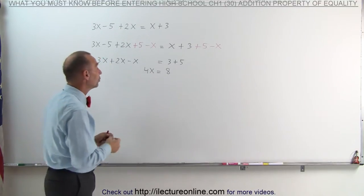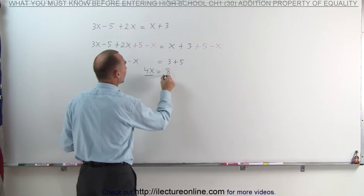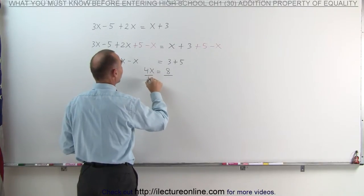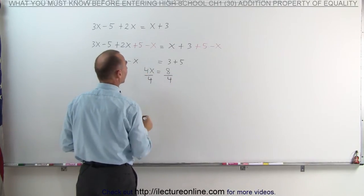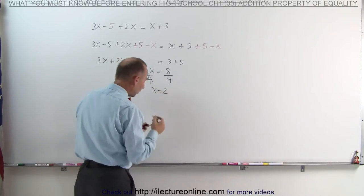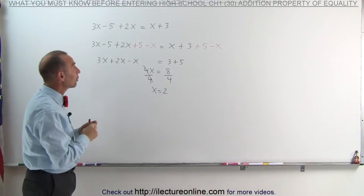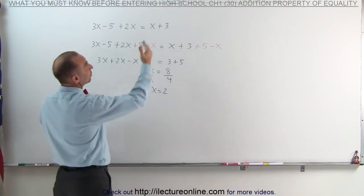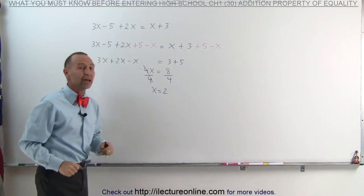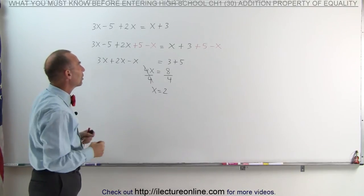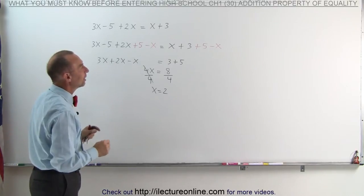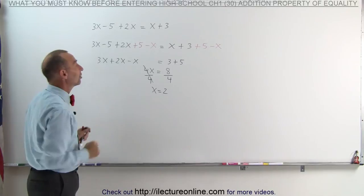Another way to find what x equals is to divide both sides of the equation by the coefficient — the number in front of x, the number multiplied by x. So if I divide the left side by 4 and the right side by 4, the 4s disappear and x equals 2. That's ultimately what we're trying to accomplish. What we're illustrating here is that we can use the addition property of equality to eliminate unwanted terms on both sides of the equal sign by doing exactly the same thing on both sides.